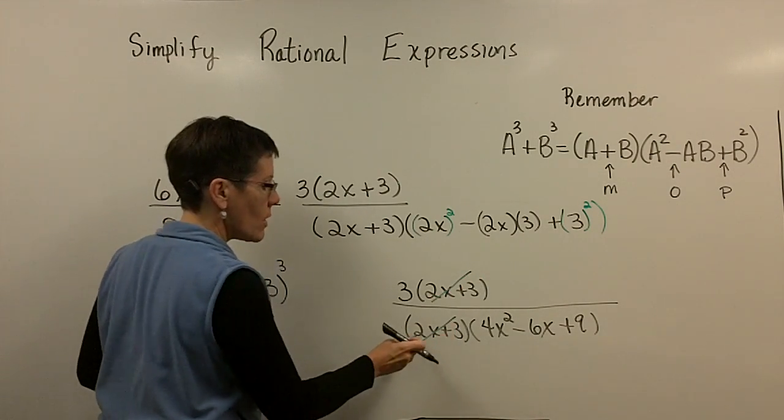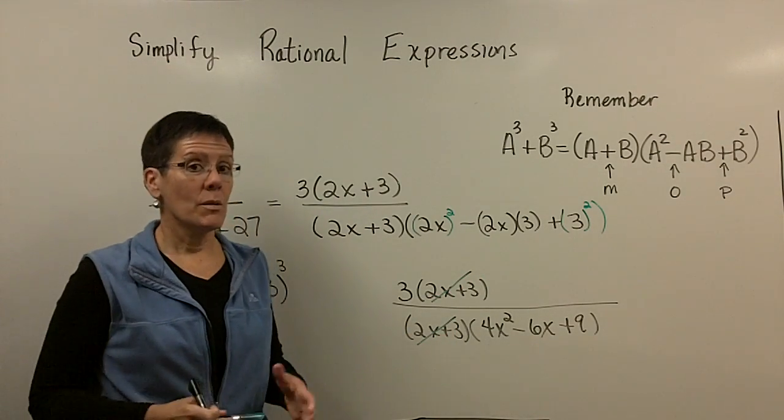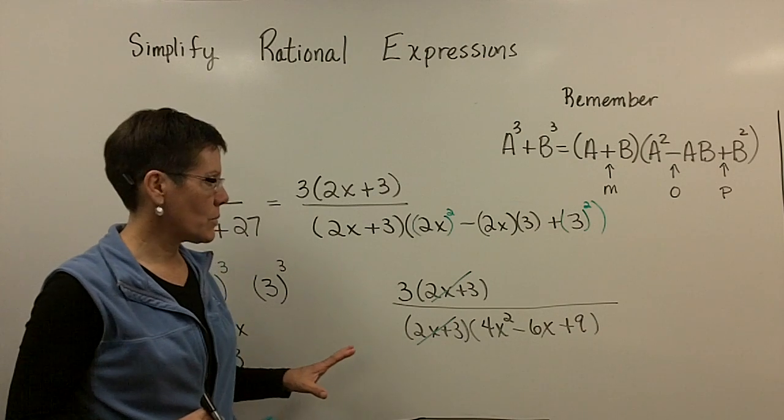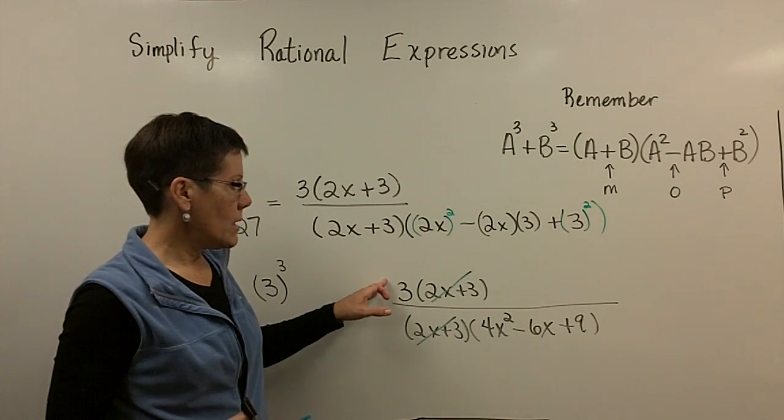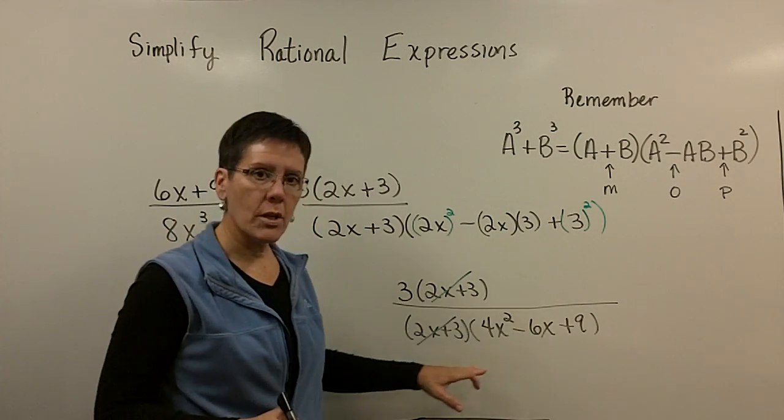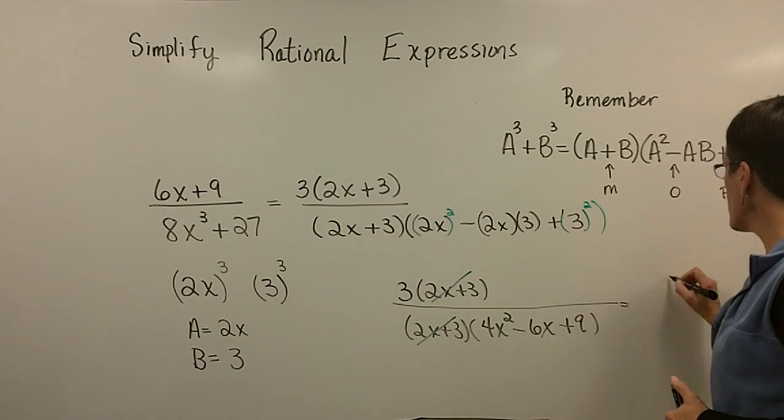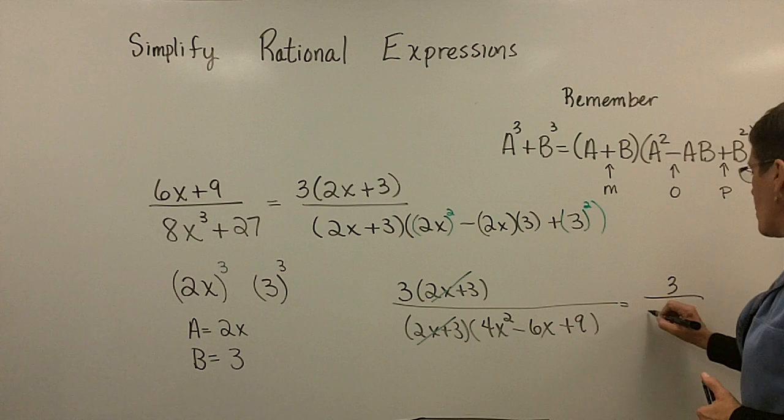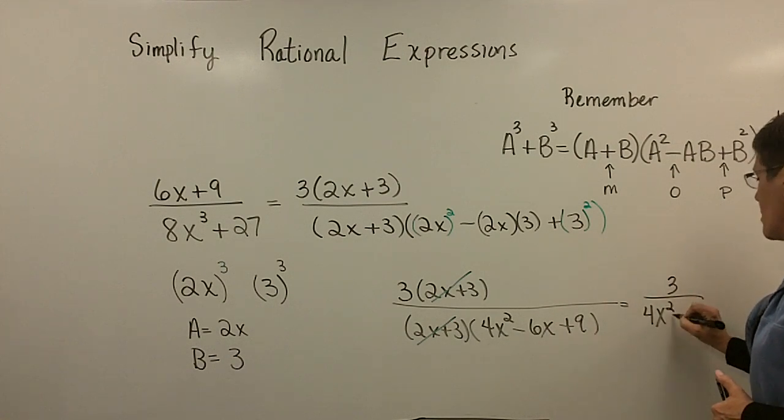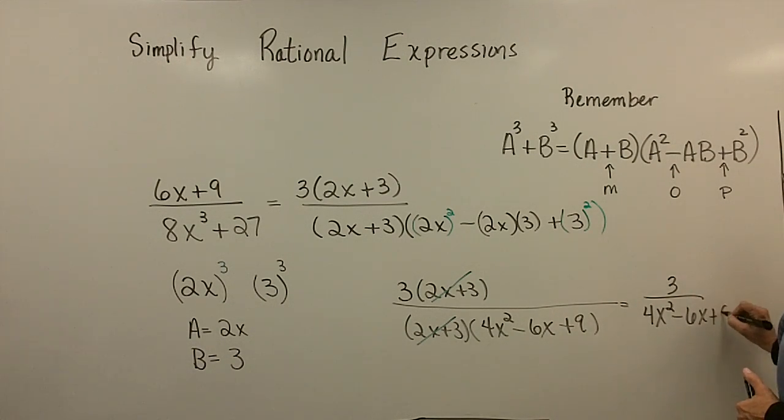That's the factored form of the top and the bottom. And I would cross these off because they're equal to 1. And my final answer is, I don't have room to write this right now, but it is this 3 over this trinomial. Actually, maybe I can fit it in over here, so I'm going to go ahead and put this. My final answer to this problem is the 3 over the 4x squared minus the 6x plus the 9.